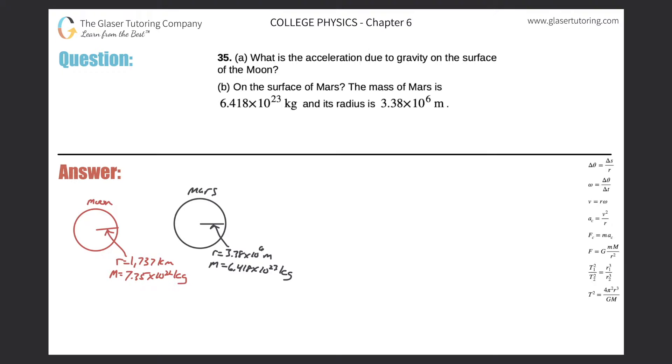Number 35, letter A. What is the acceleration due to gravity on the surface of the moon? So here's the moon, and let's take a particular point on that moon. I'm going to dot the point right here. So I want to find the acceleration due to gravity at this location due to the moon.